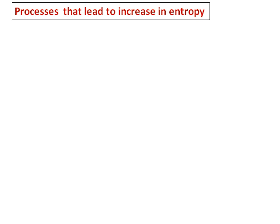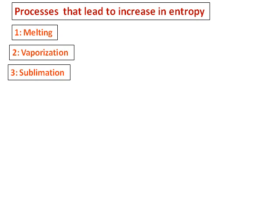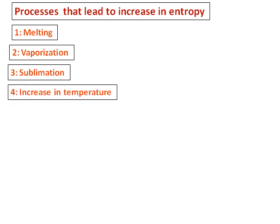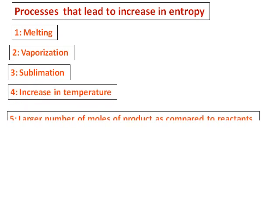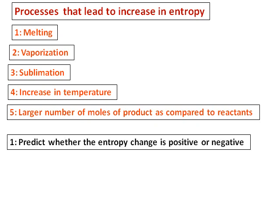Let's learn what processes lead to the increase in entropy: melting, vaporization, sublimation, increase in temperature, and a large number of moles of product compared to reactants. If you see any of these factors in a reaction or process, it will lead to an increase in entropy. Based on this, let's do a few questions.